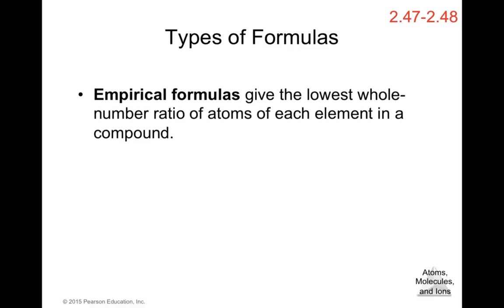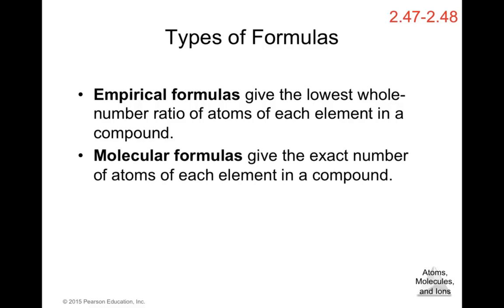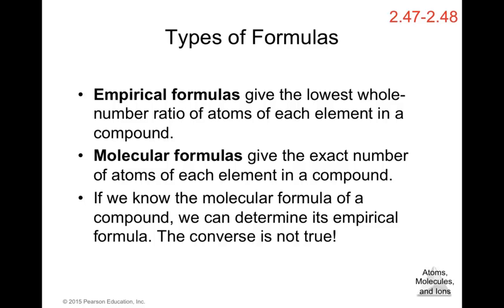There are different kinds of formulas. Empirical formulas give the lowest whole-number ratio of atoms of each element in a compound. Molecular formulas give the exact number of atoms of each element. If we know the molecular formula, we can determine the empirical formula, but from the empirical formula alone we cannot determine the molecular formula, as many different molecules can share the same empirical formula.